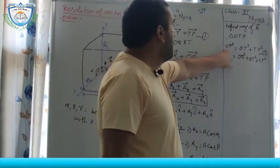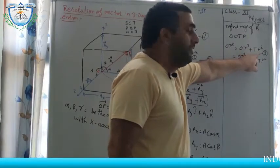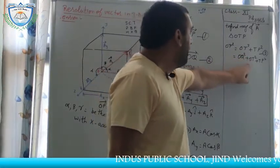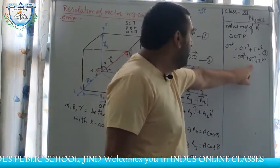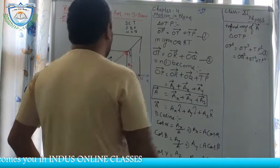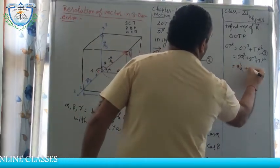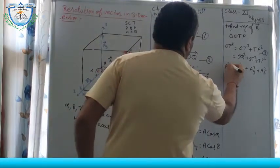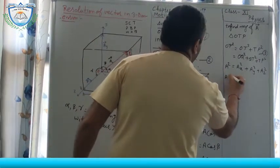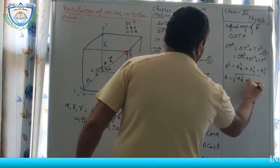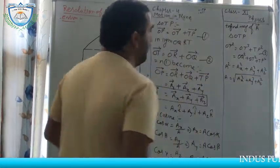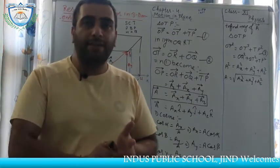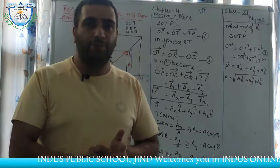To find the magnitude of vector A: OP² = OT² + TP², and OT² = OQ² + QT². So we get OQ² + QT² + TP² = OP², which gives Ax² + Ay² + Az² = |A|². Therefore, the magnitude of A is the square root of Ax² + Ay² + Az². When resolving any vector into 3 components, the magnitude equals √(x² + y² + z²).